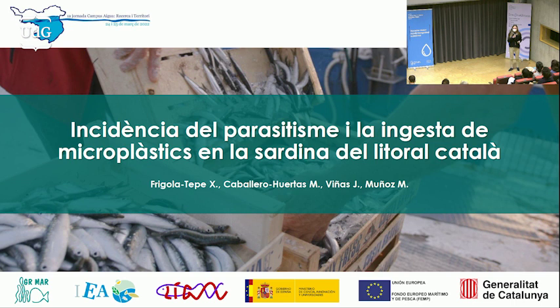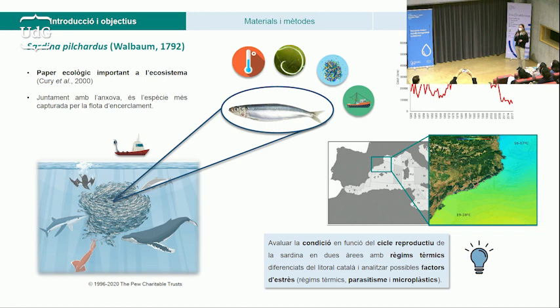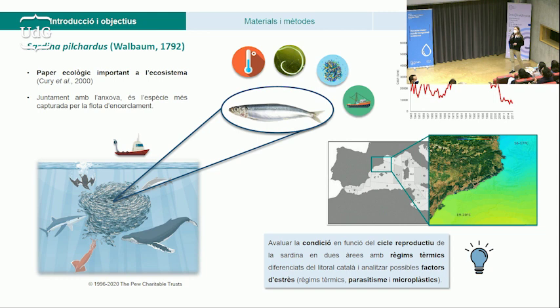Bona tarda. Em dic Xenia Frigola Tepe i us presentaré una part de la meva tesi doctoral, que és l'incidència del parasitisme i la ingesta de microplàstics en la sardina del litoral català. La sardina europea (Sardina pilchardus) és una espècie pelàgica d'aigua freda que es distribueix pel mar Mediterrani i per l'oceà Atlàntic, des del mar del nord fins a les costes del Senegal. Té un paper ecològic molt important a l'ecosistema marí, transferint l'energia dels nivells tròfics inferiors als superiors, i juntament amb l'anxova és l'espècie més capturada per la flota d'encerclament de les nostres costes. En els últims anys s'ha detectat una forta davallada de les seves captures, acompanyada d'una reducció de la longitud total, de la talla de maduració sexual i de la condició, és a dir, de les seves reserves energètiques.